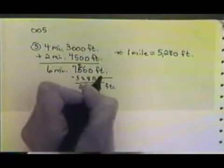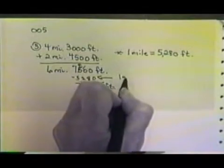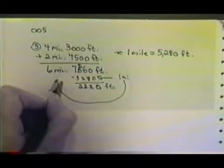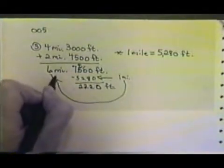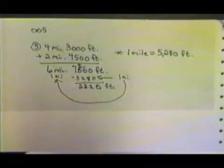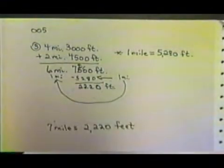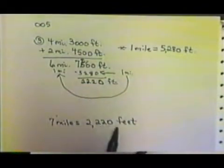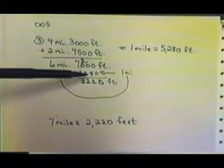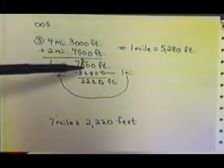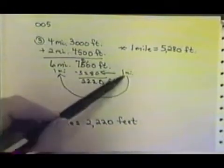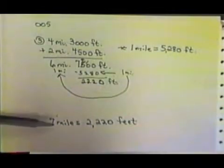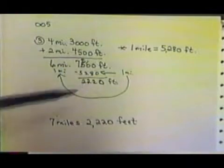So, the 5,280 that we took away was 1 mile. So, what we'd want to do is take that 1 mile and put it over here with the 6 miles that we already had. So, what would happen is our answer would end up being 7 miles, 2,220 feet. So, we took the 5,280 feet away from the 7,500 feet and that was a mile. We added that mile to the 6 miles that we already had, which gave us 7 miles and we have left 2,220 feet.